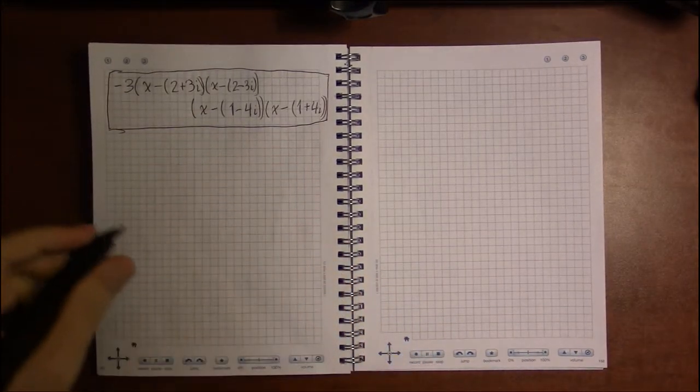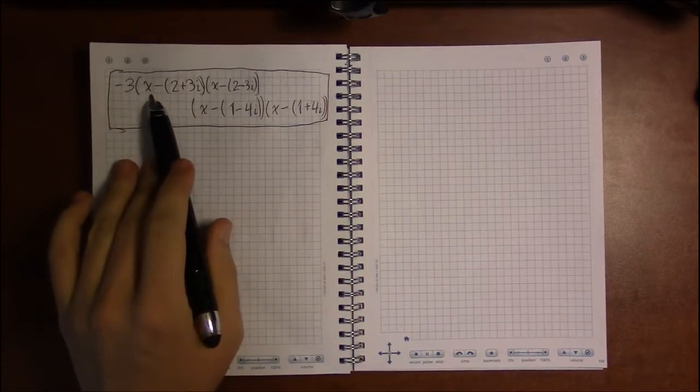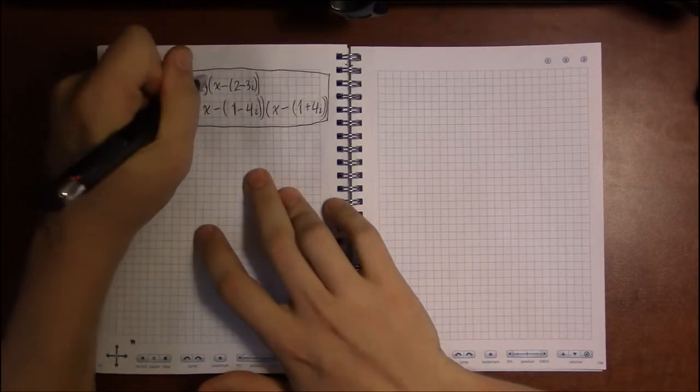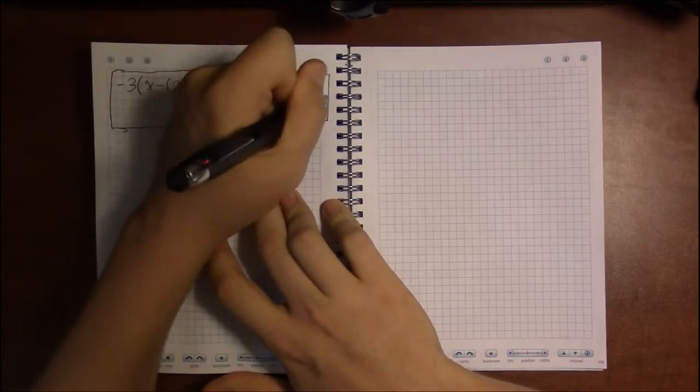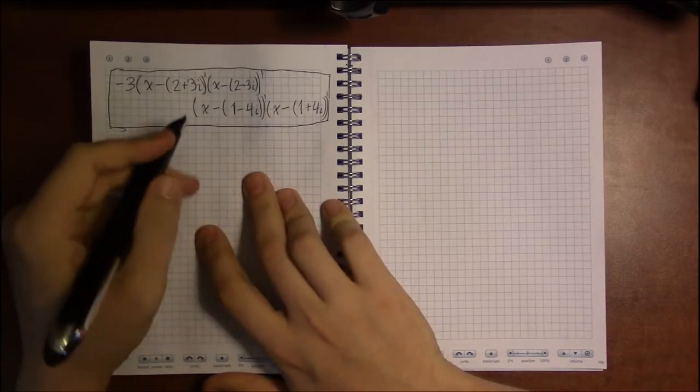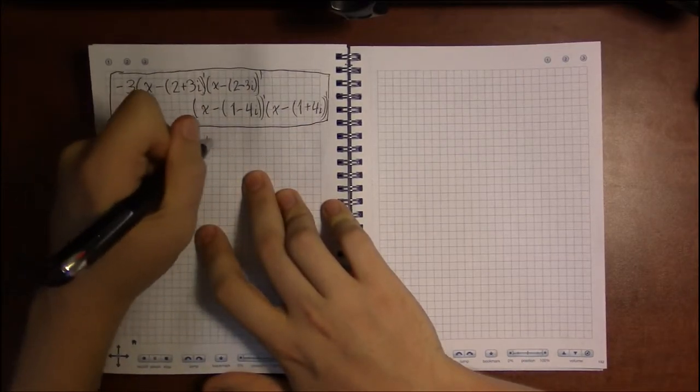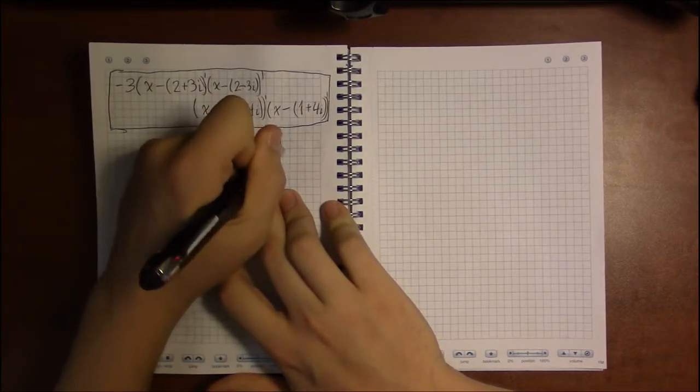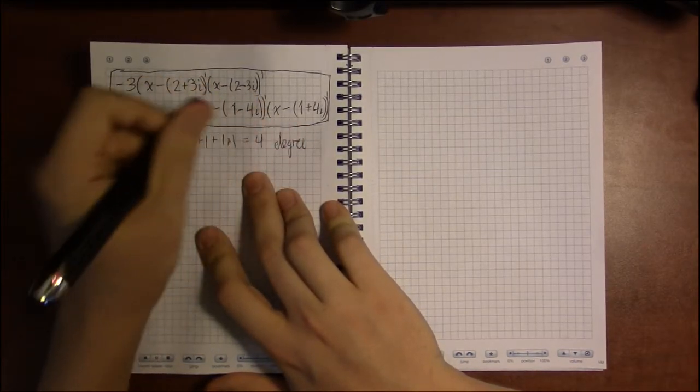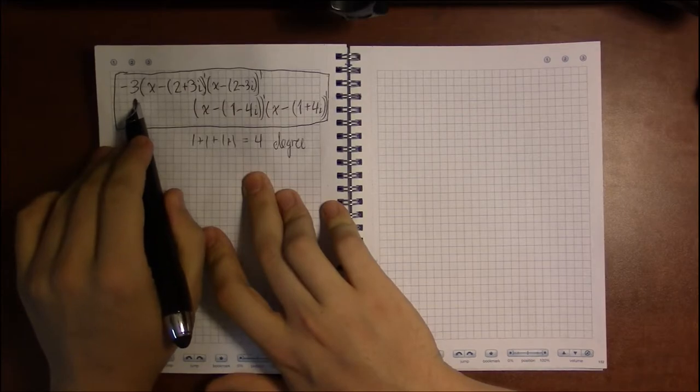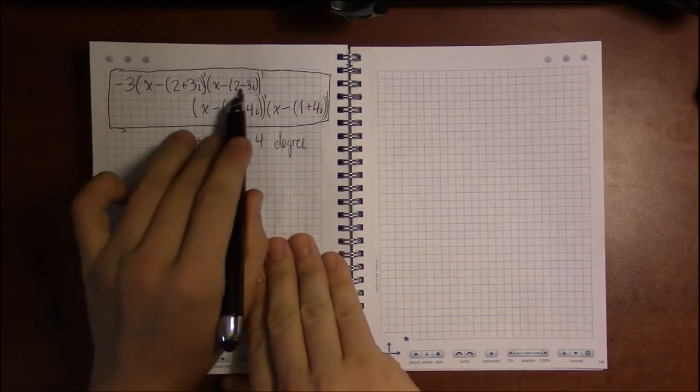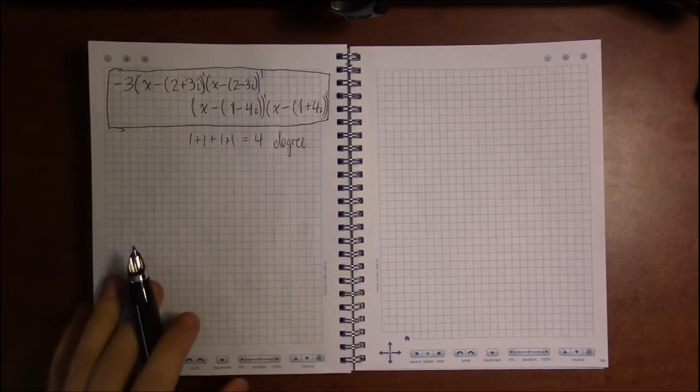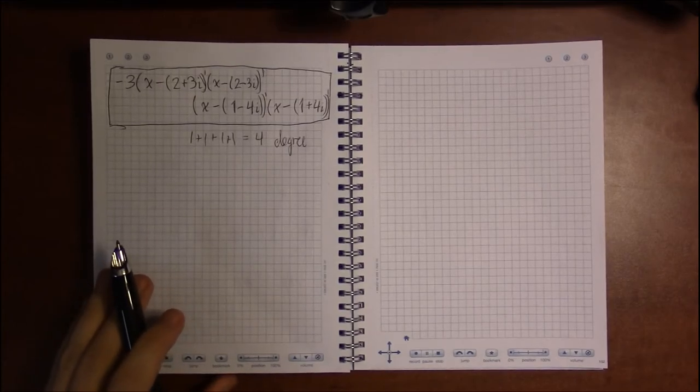If you were to multiply this out, you would end up with a degree four polynomial because these multiplicities are all one. Adding up the four multiplicities you're going to get degree four, your leading coefficient will be minus three, and your zeros will be all the zeros required for this polynomial.